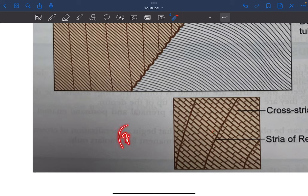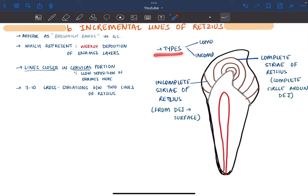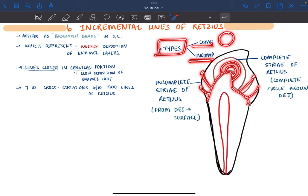There are two types of lines of Retzius: complete and incomplete. Complete lines make a full circle around the dentinoenamel junction, and incomplete lines move from the dentinoenamel junction to the outer surface.